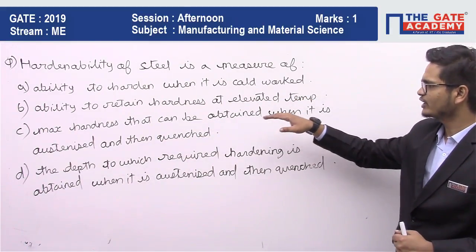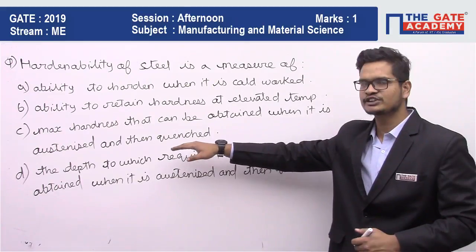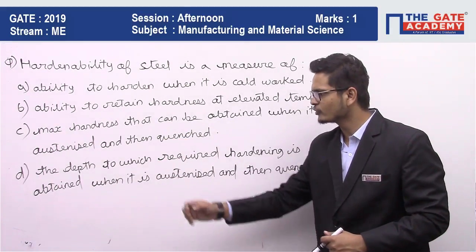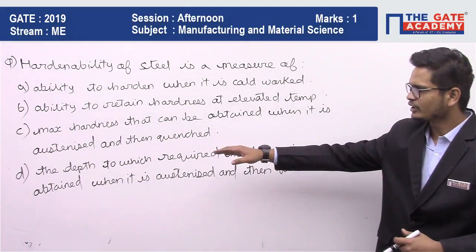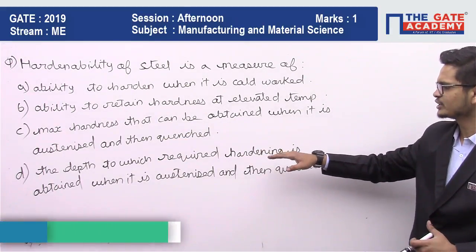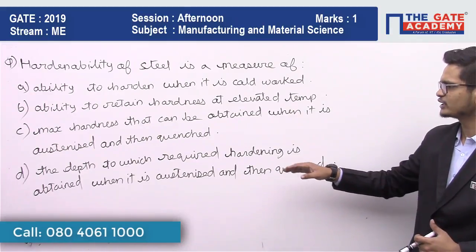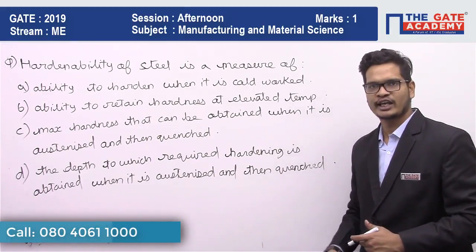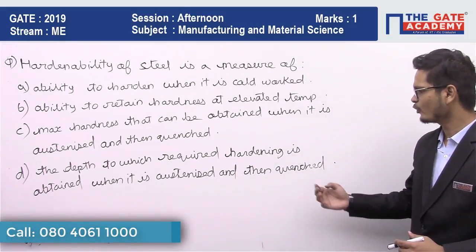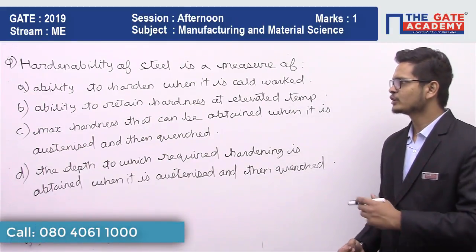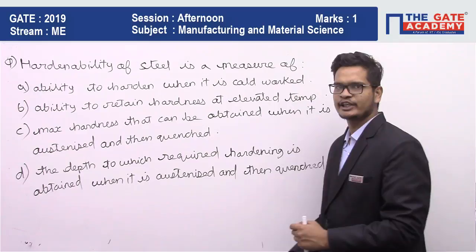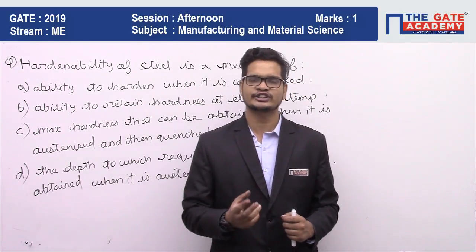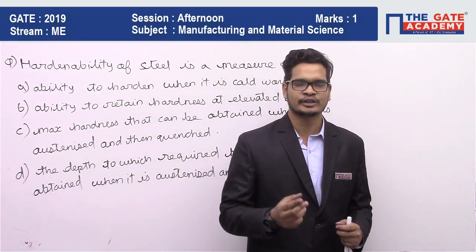The fourth option is the depth to which required hardening is obtained when it is austenized and then quenched. Now, hardenability is always mentioned in terms of the distance or the depth.